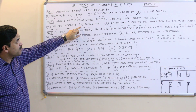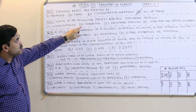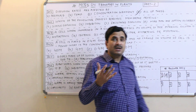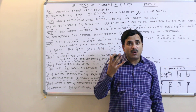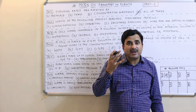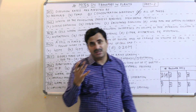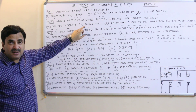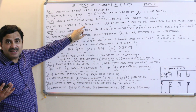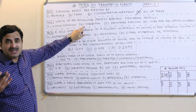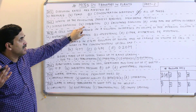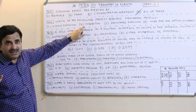Imbibition also does not require membrane proteins — it is just the adsorption of water by a solid colloidal substance. For example, wooden doors and windows imbibed moisture in the rainy season and swell up. There is no use of any membrane protein in imbibition.